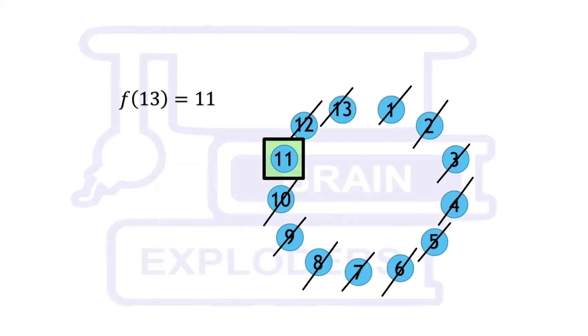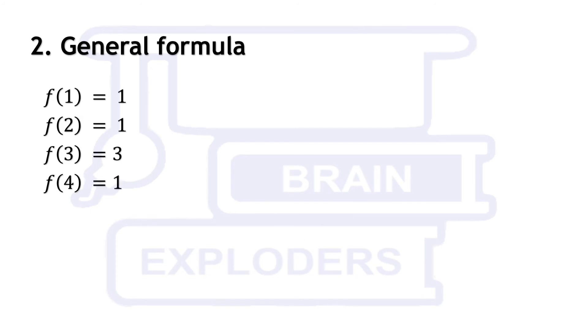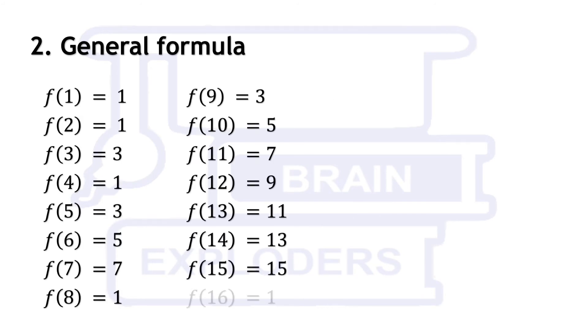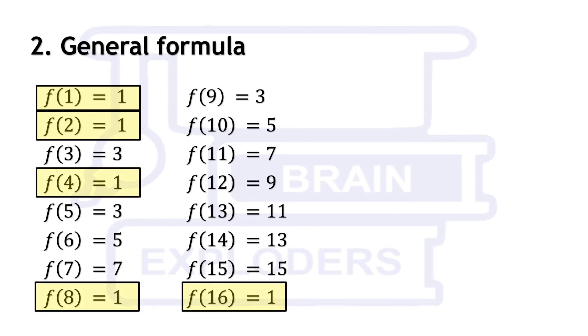Here comes the second and easier way to solve the problem. Here, value of f(n) for first 16 numbers is given. Pause the video and try to figure out the general rule for this sequence. Ready? Value of f(n) is 1 when n is equal to some power of 2. For example, 32 is 5th power of 2. Thus, f(32) is equal to 1.